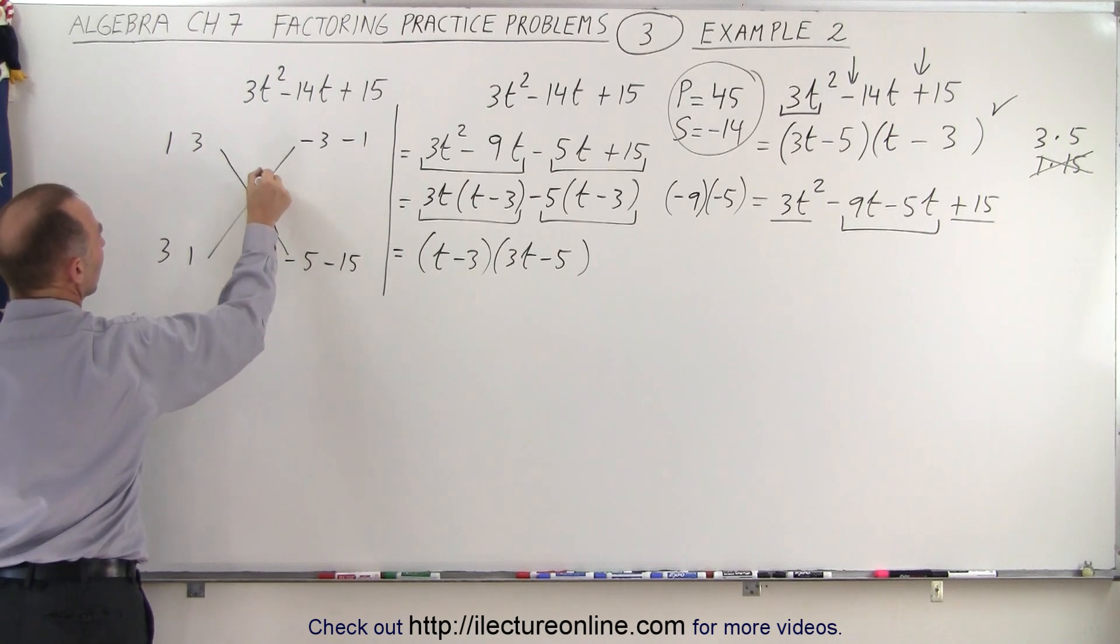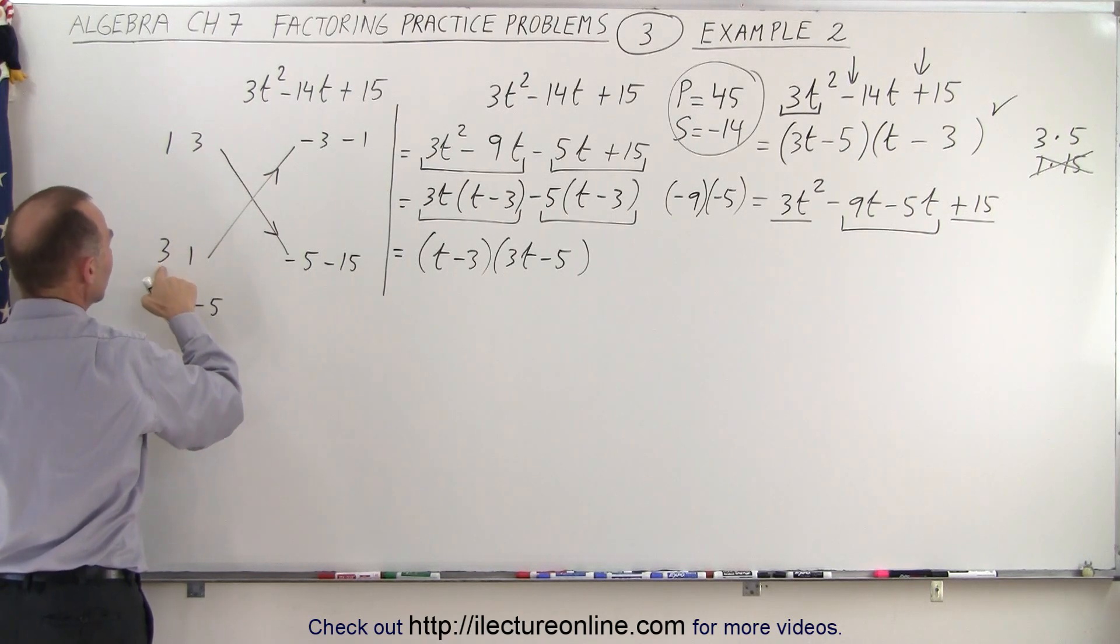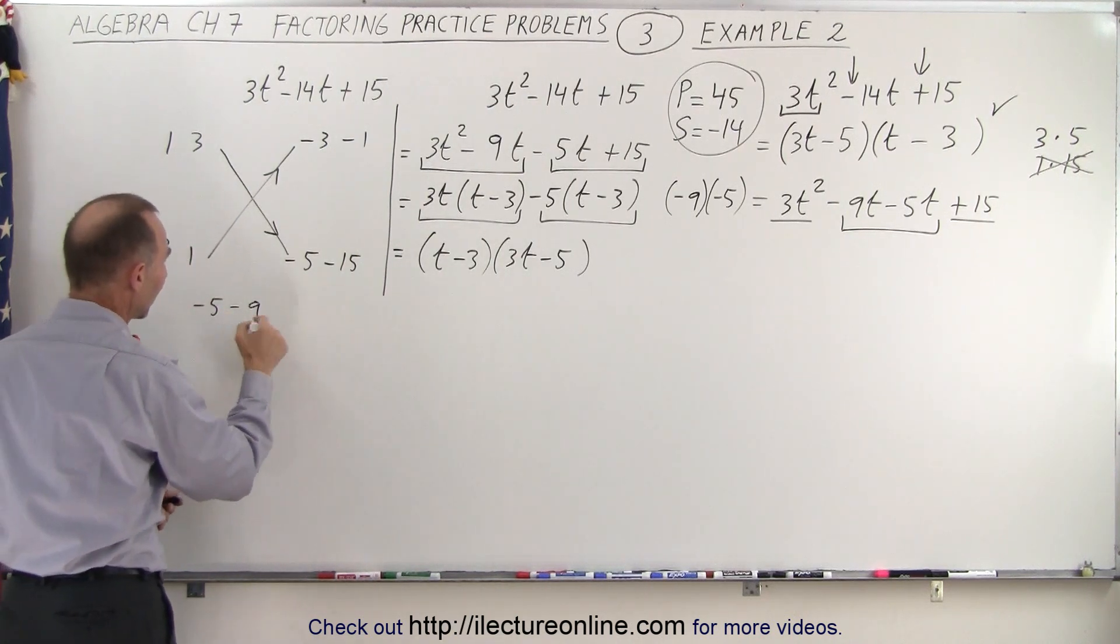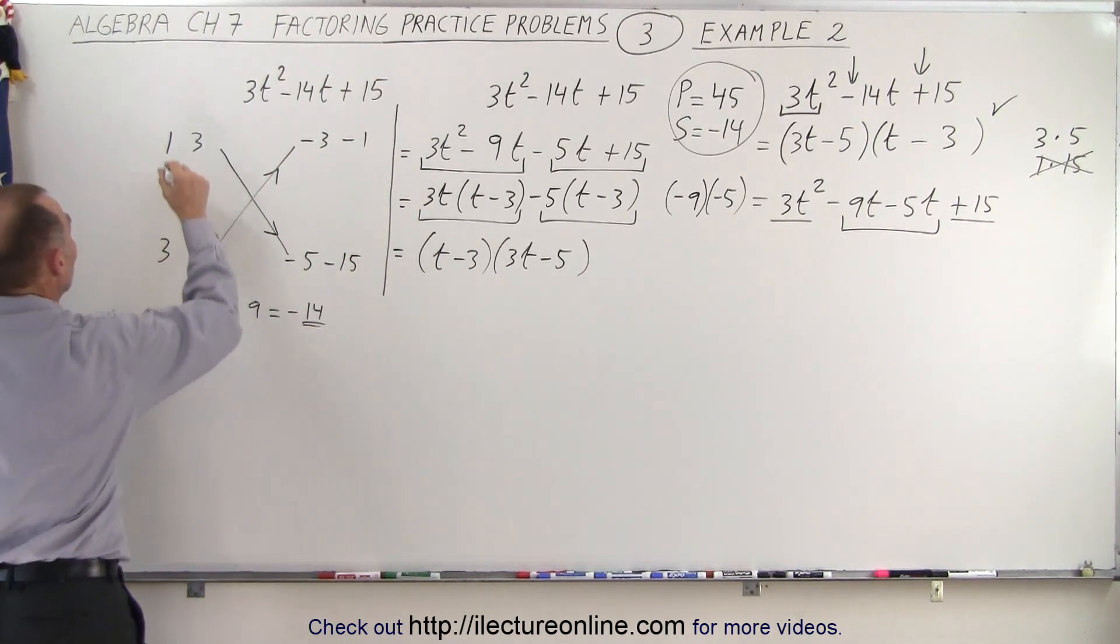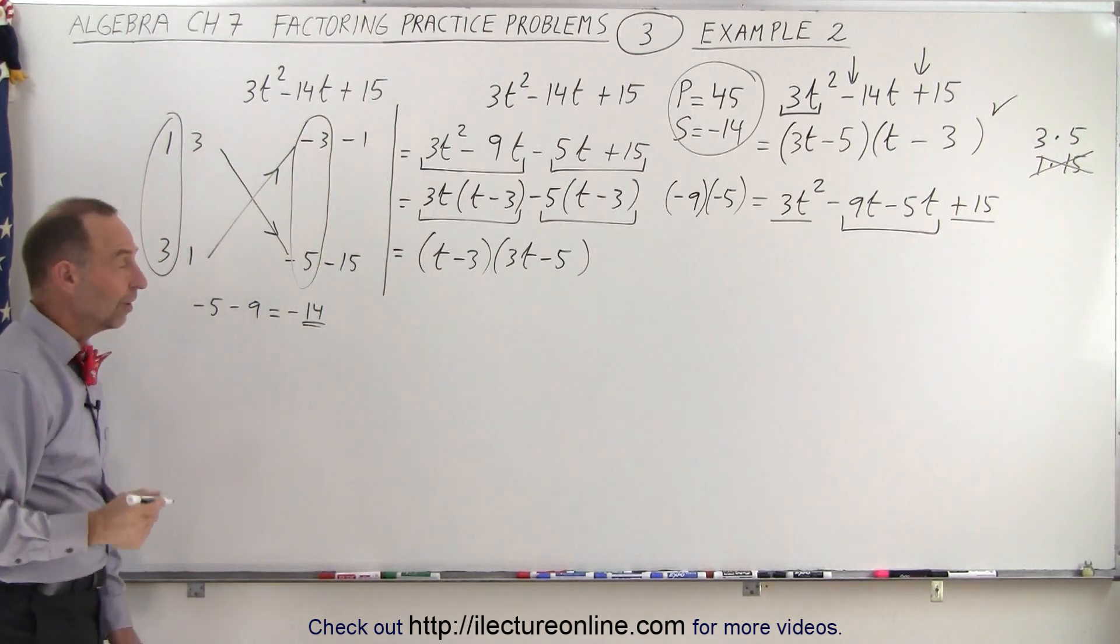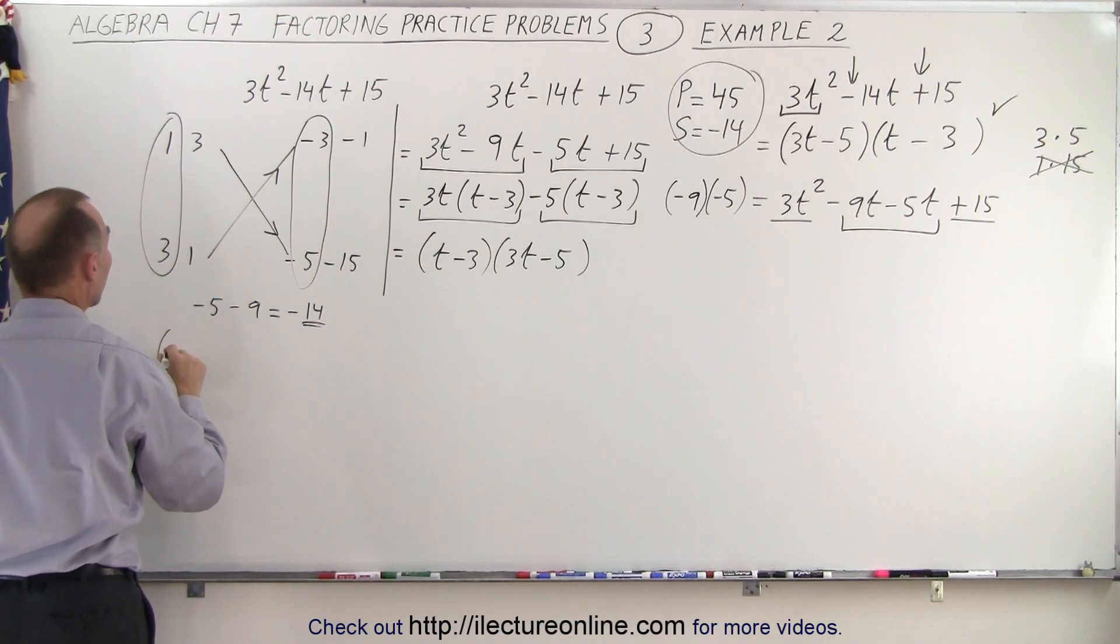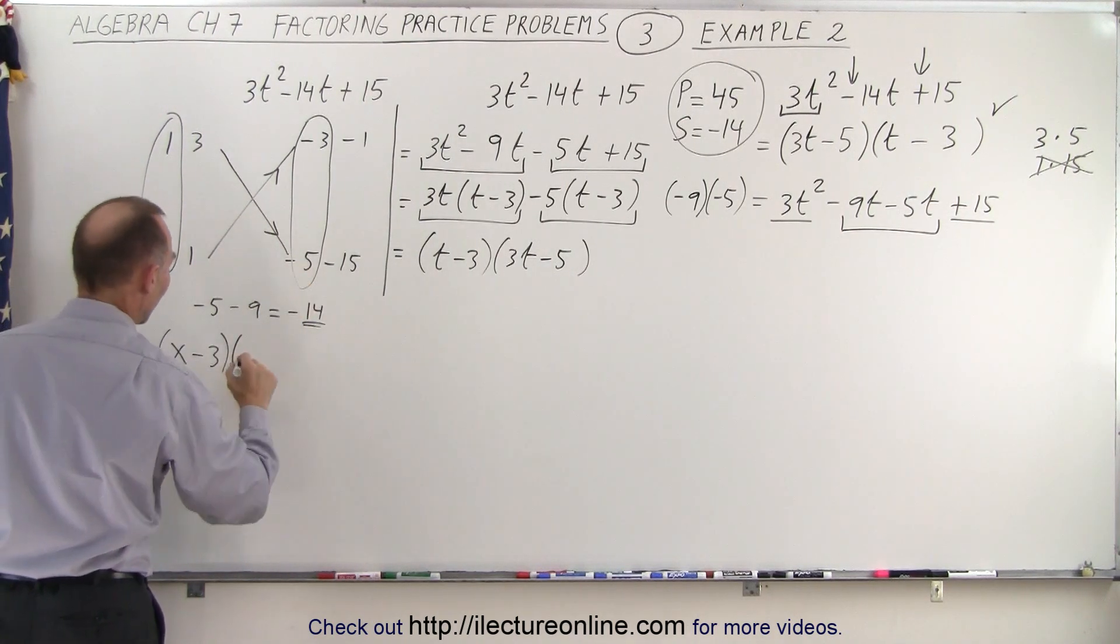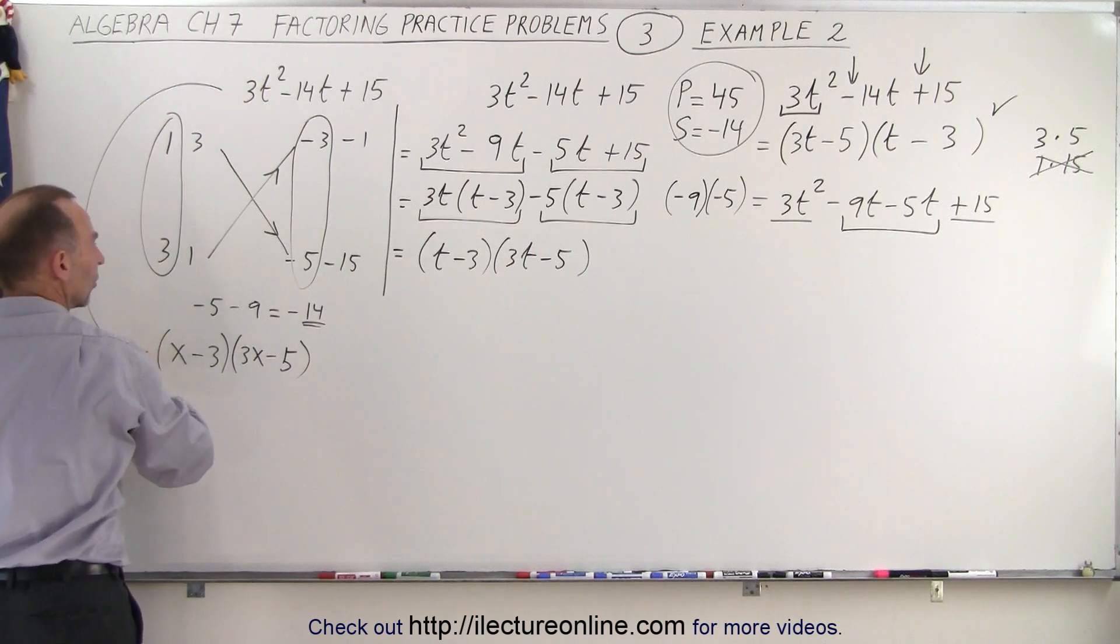So now what we're going to do is try this. And of course the arrows go this way. So 1 times a negative 5 is a negative 5 and a 3 times a negative 3 is a minus 9. When we add these together, minus 5 minus 9 is equal to minus 14 which gives us the middle term. Wow, first time out we got the right combinations. We need this number, these numbers and these numbers and we're in business which means that 1 times x minus 3 is 1 binomial. So x minus 3 and we'll multiply the times 3x minus 5.